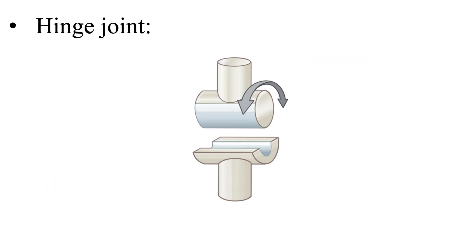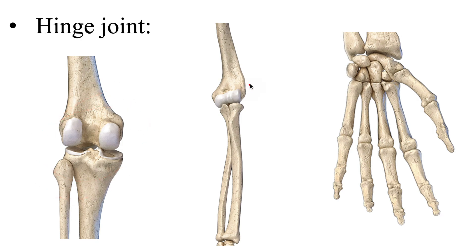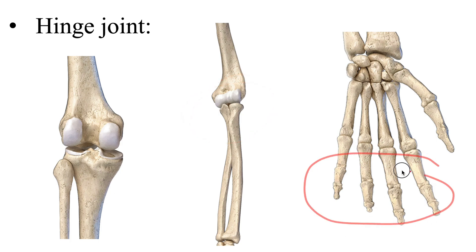Next we have a hinge joint. This joint functions like a hinge on a door — one that can only open and close in one direction or one plane — allowing for flexion and extension only. For example, we have the tibial femoral joint (the knee), the humeral ulnar and humeral radial joint (the elbow), and the interphalangeal joints. All are hinge joints allowing only flexion and extension in one plane.